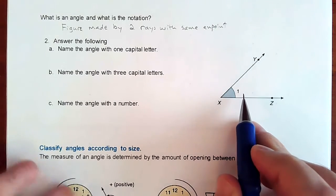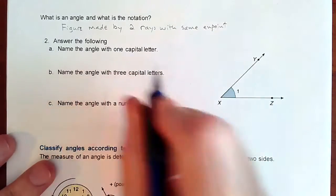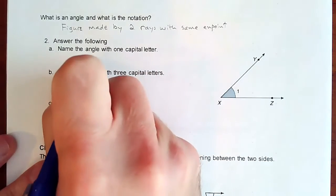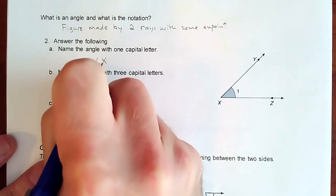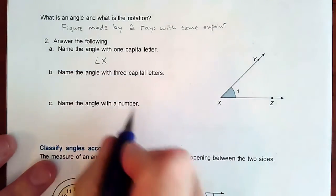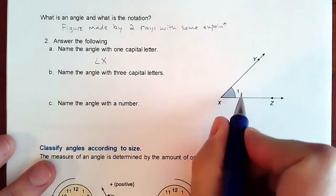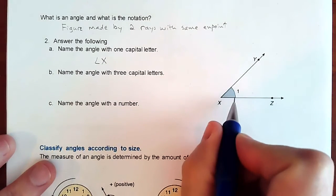So a couple different ways to name an angle. We can name an angle with a letter. So angle x. So that symbol is what we're going to use to always name it. So if it was angle x, then that would be only one option would be that angle right there.